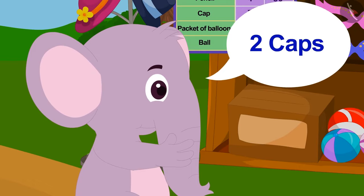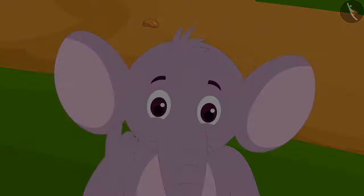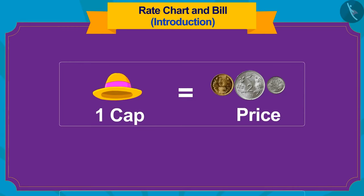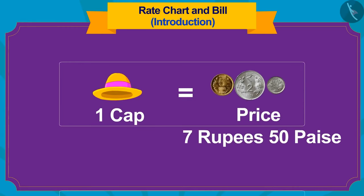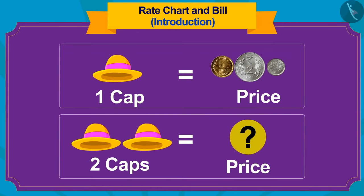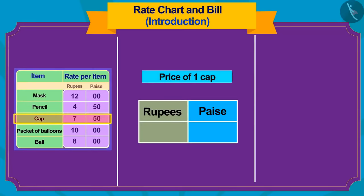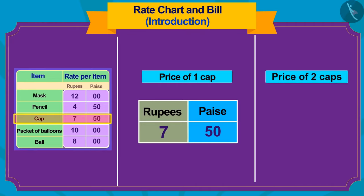Appu has to buy two caps. Appu is thinking that the price of one cap is 7 rupees 50 paise. So, how much will two caps cost? Come, let us help Appu. First, we will write the price of a cap in rupees and paise. Now, what do we need to do to find the price of two caps?